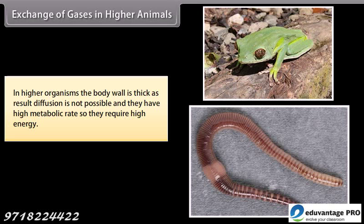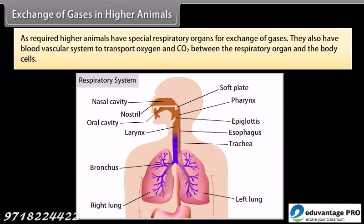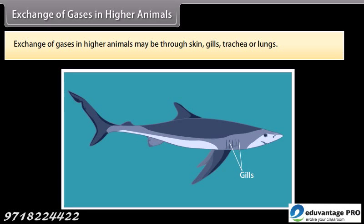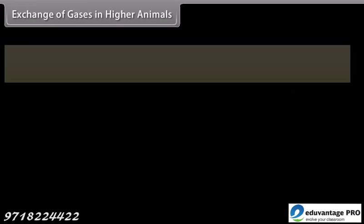In higher organisms the body wall is thick; as a result, diffusion is not possible, and they have a high metabolic rate so they require high energy. Therefore, higher animals have special respiratory organs for exchange of gases. They also have a blood vascular system to transport oxygen and CO2 between the respiratory organ and the body cells. Exchange of gases in higher animals may be through skin, gills, trachea, or lungs.